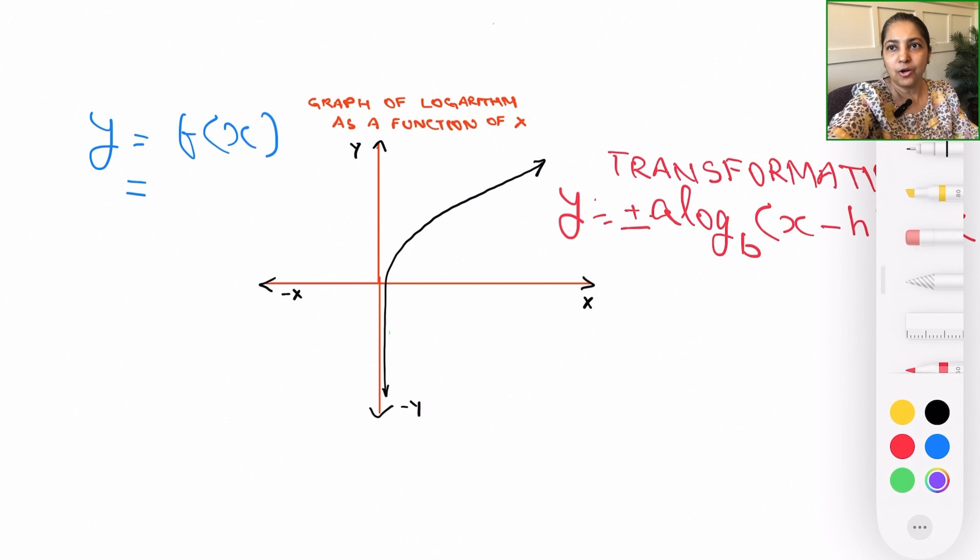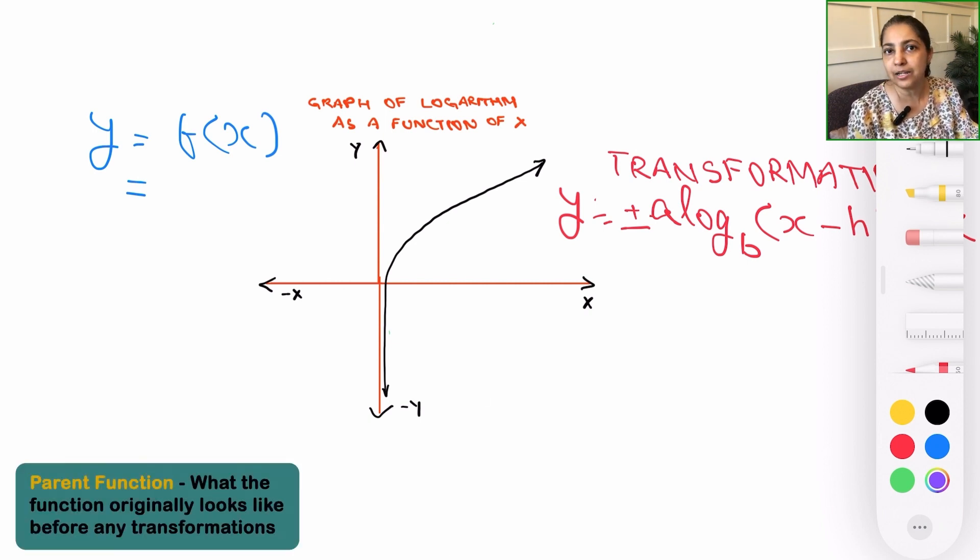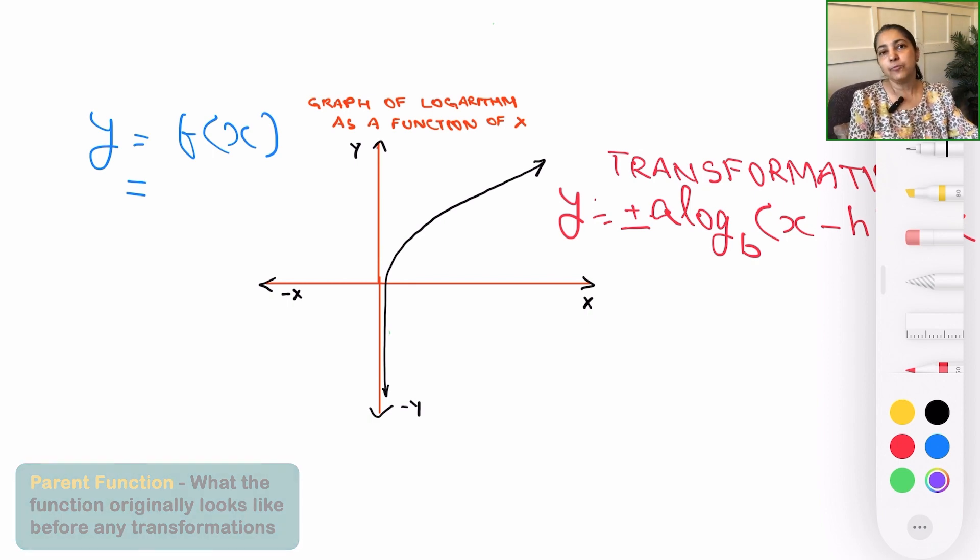Well, as you will recall, on one of the prior videos, I had shown you the basic shape of a logarithmic graph and that is exactly what you see on the screen. So that is called a parent shape or the shape of a parent function for any logarithmic function before plotting.